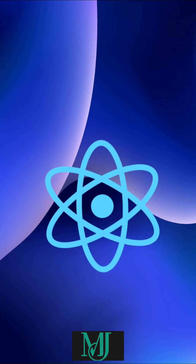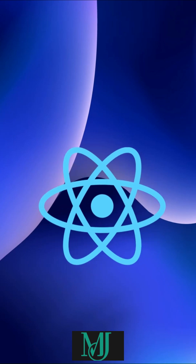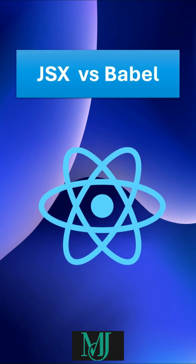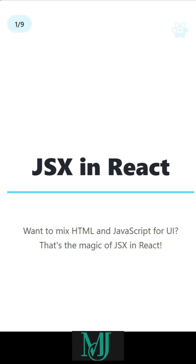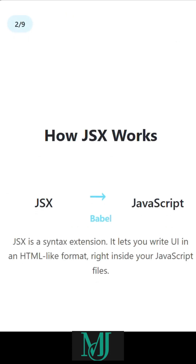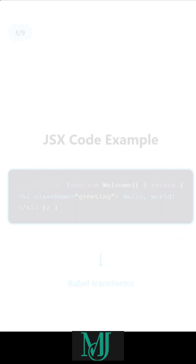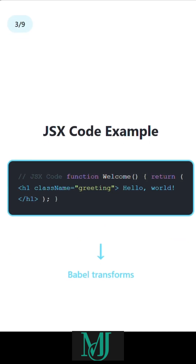To mix HTML and JavaScript when building user interfaces — that's the magic of JSX in React. So what is JSX? It's a syntax extension. It lets you write your UI in an HTML-like format inside your JavaScript files.